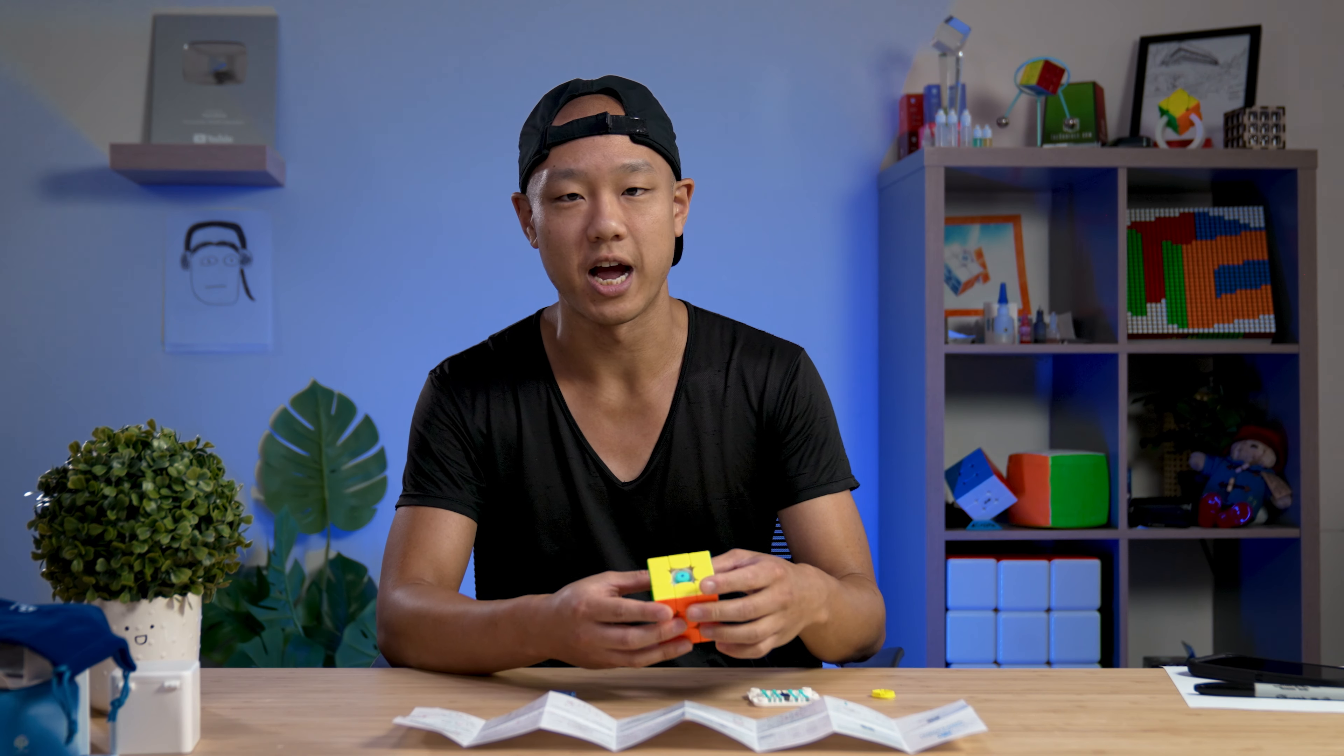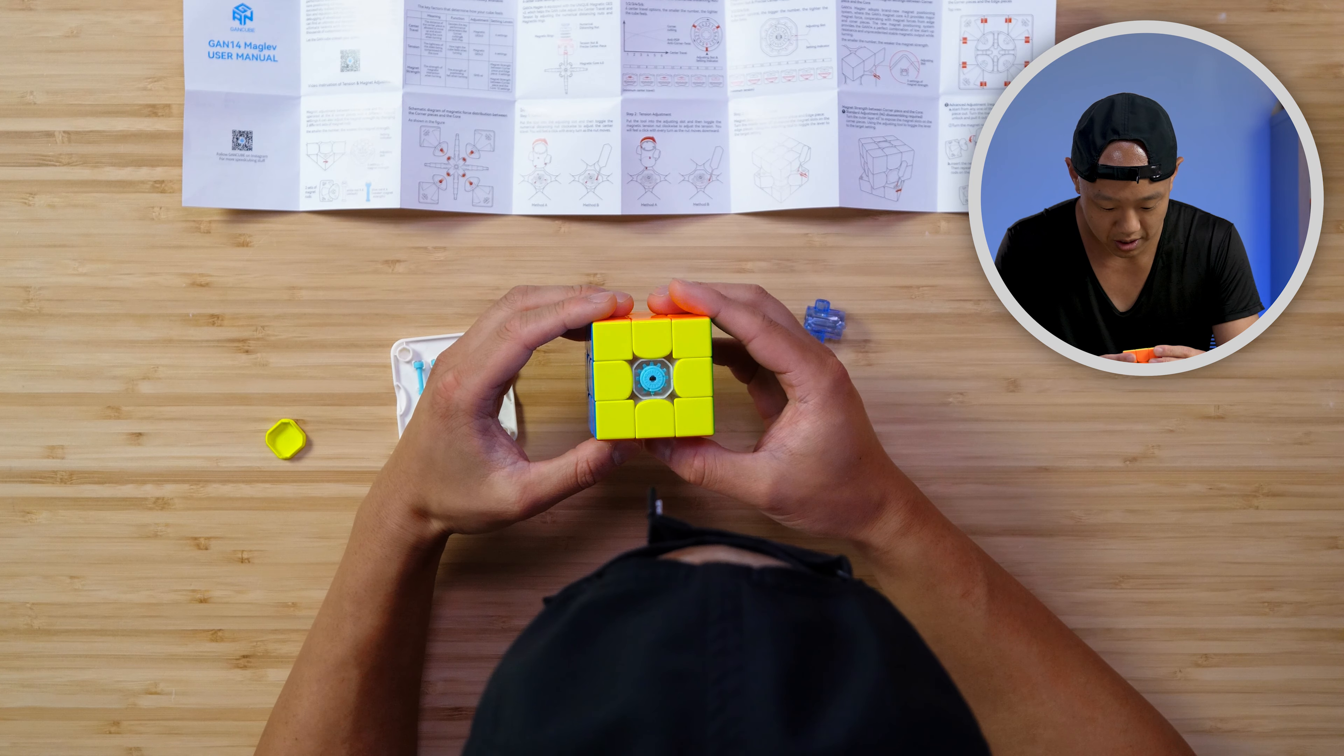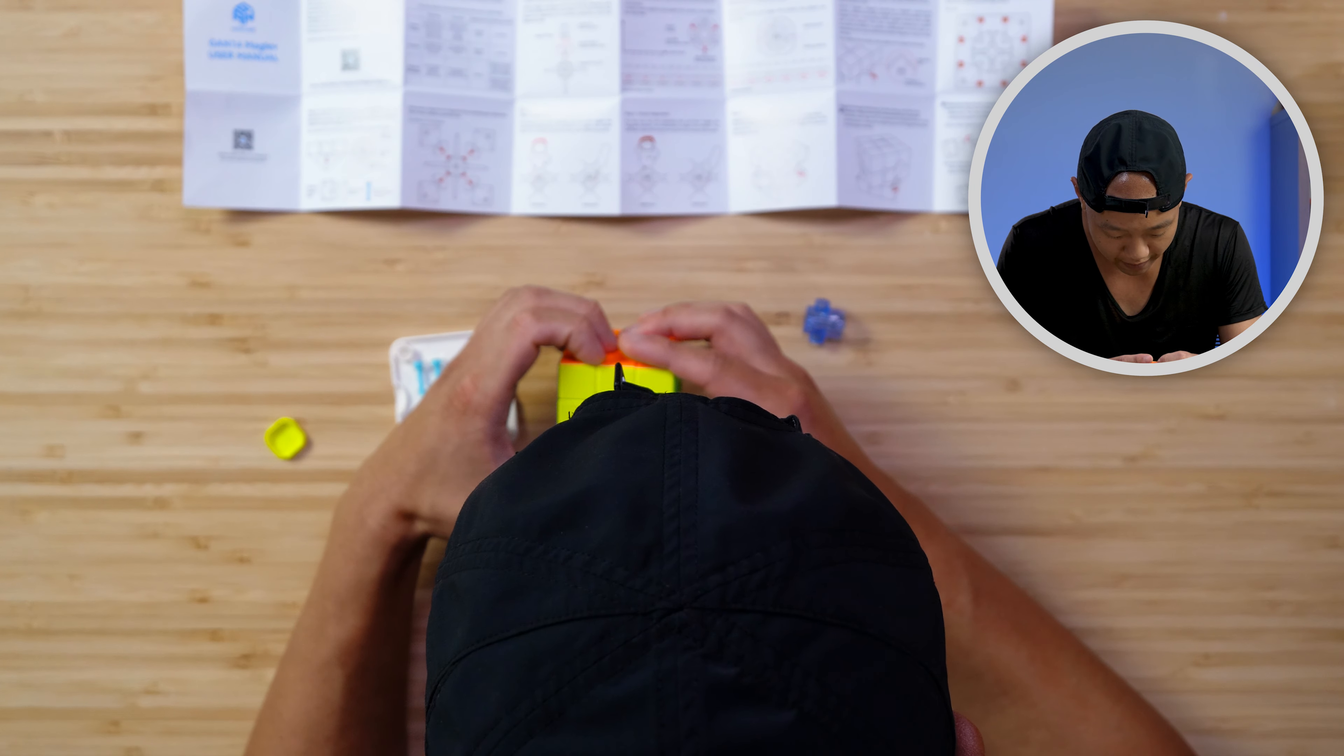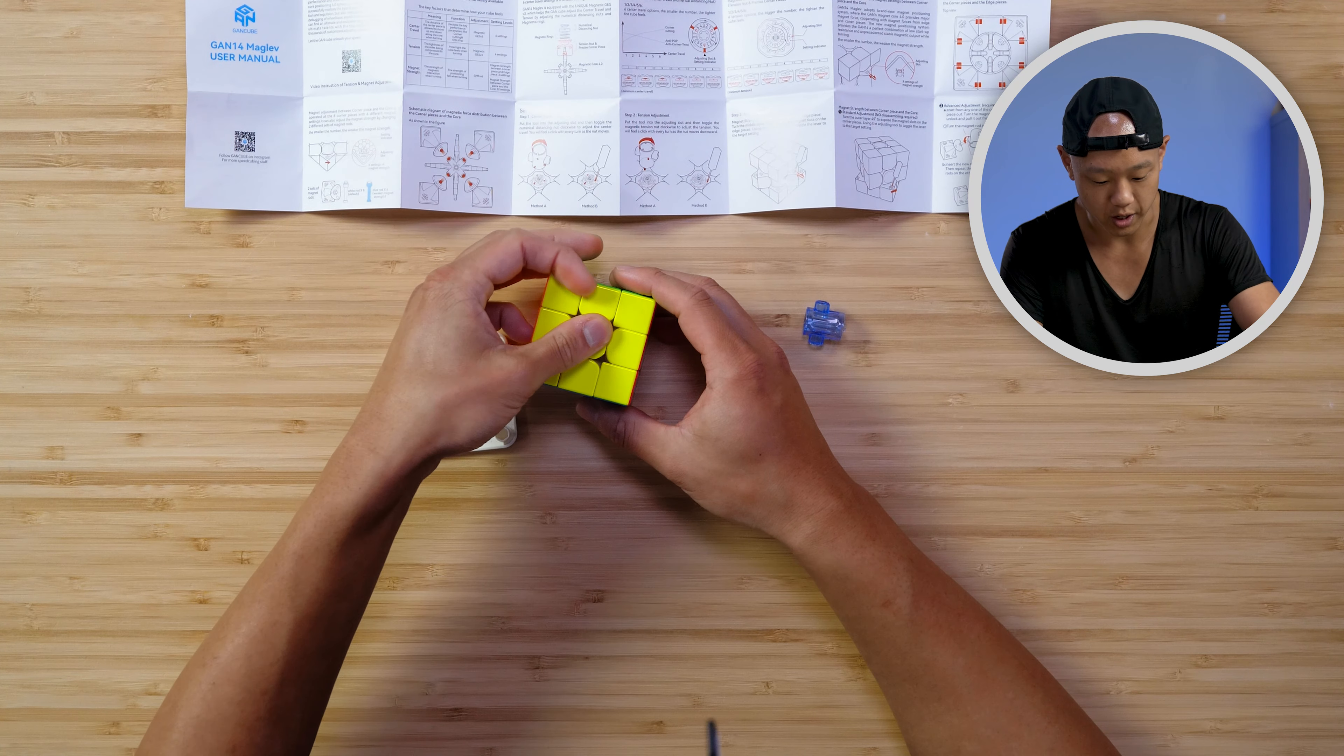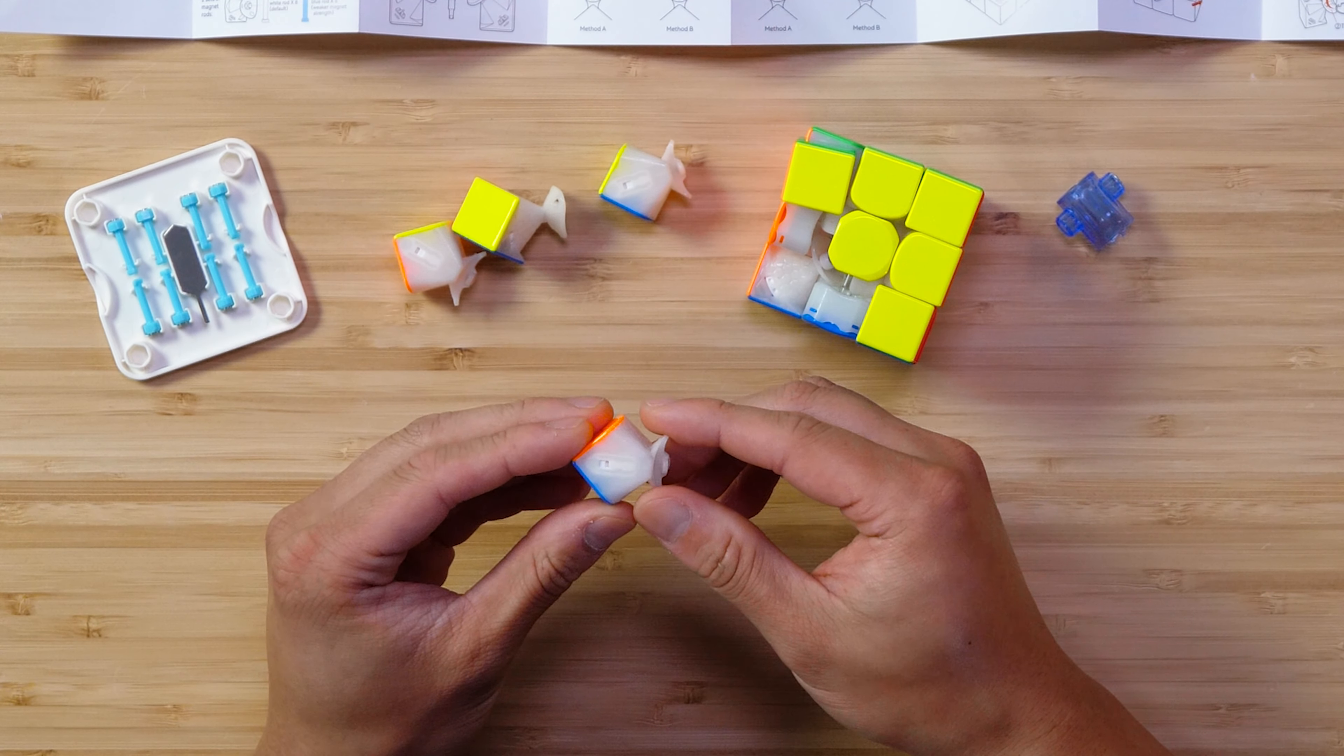I cheated and Steven told me the settings that he likes, and I like Steven's settings a lot. He has the elasticity set at 2 and the tension set at 5. I felt like he just shared the cheat codes of a video game with me and I just plugged it in and the cube was really good. So definitely try that. We're going to close that up and take the cube apart.